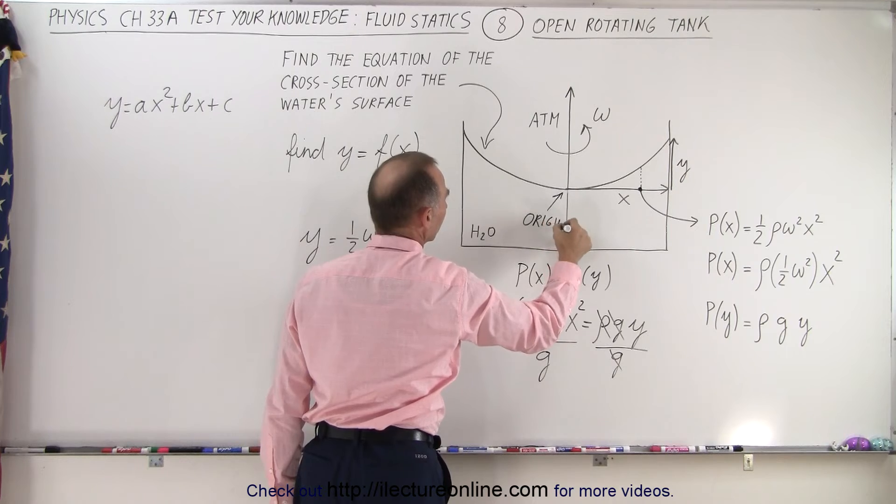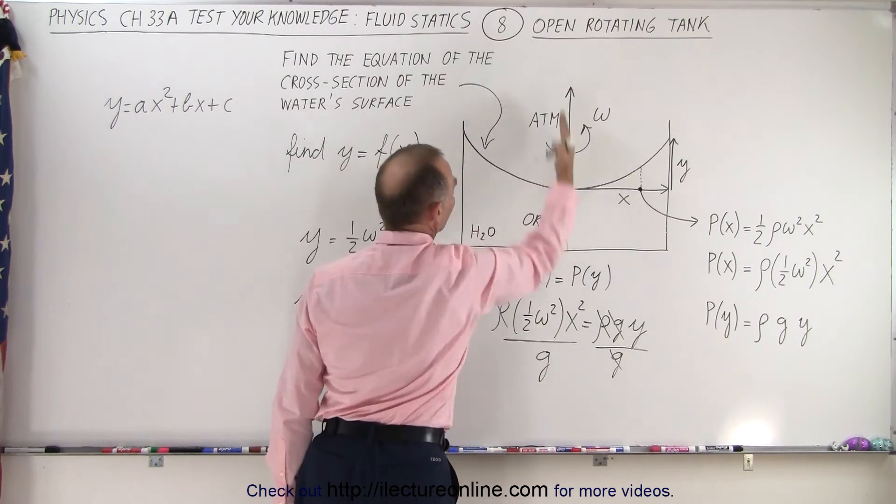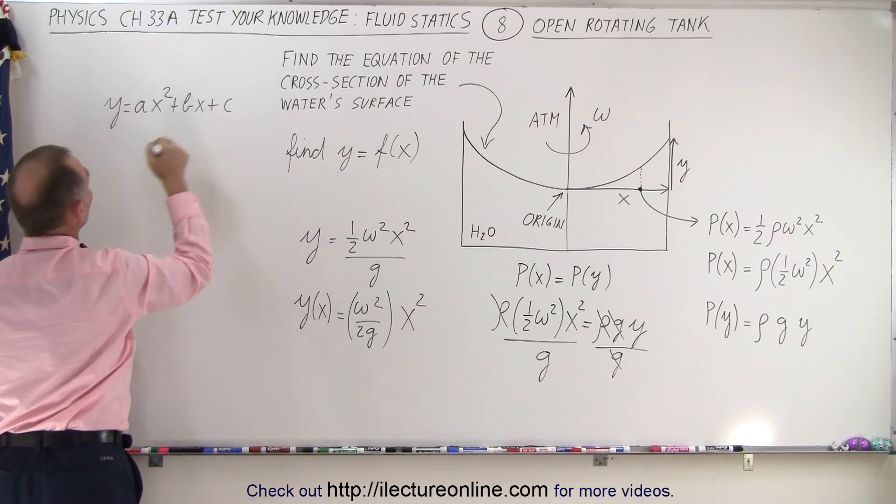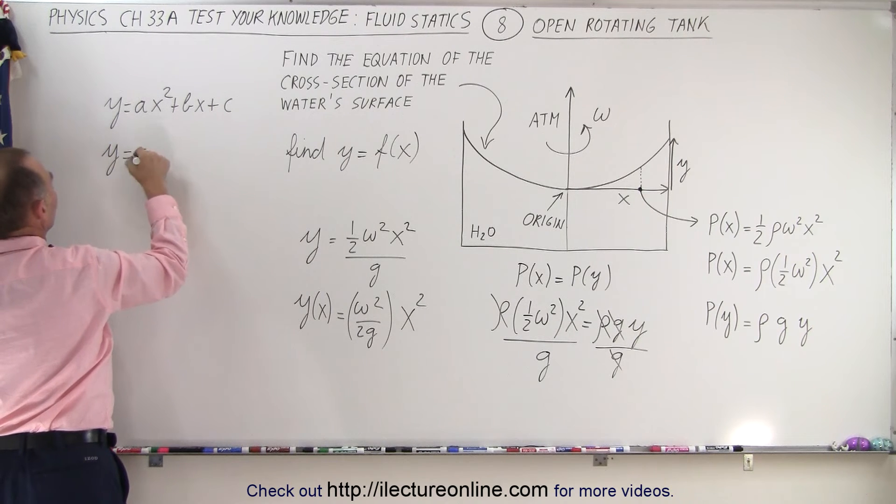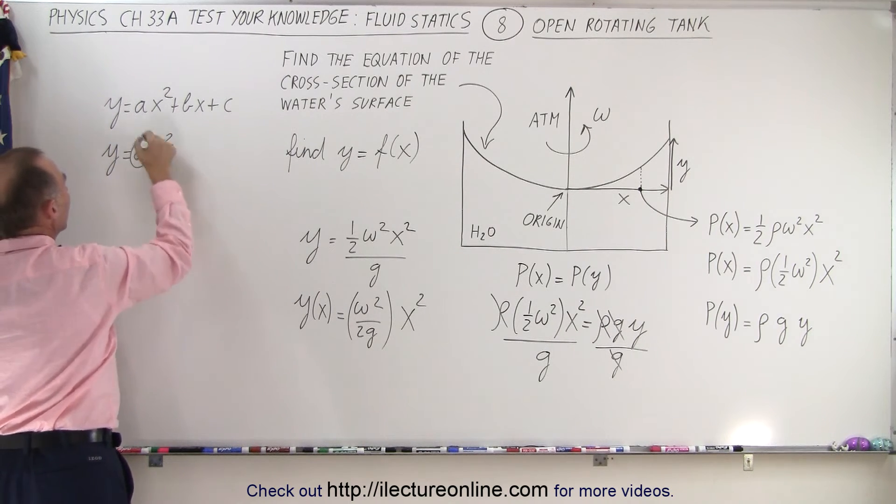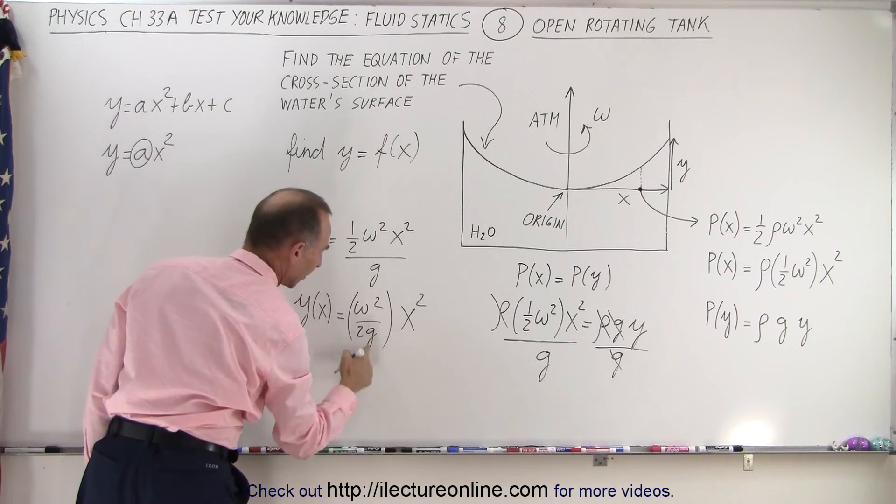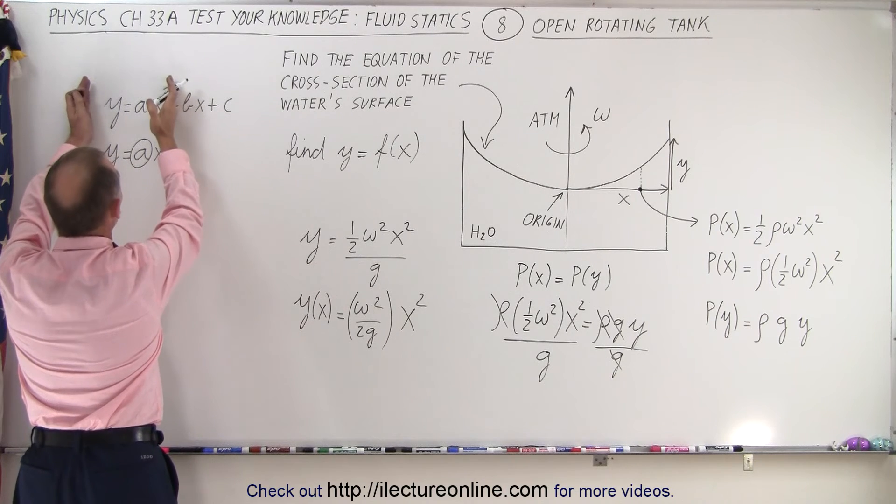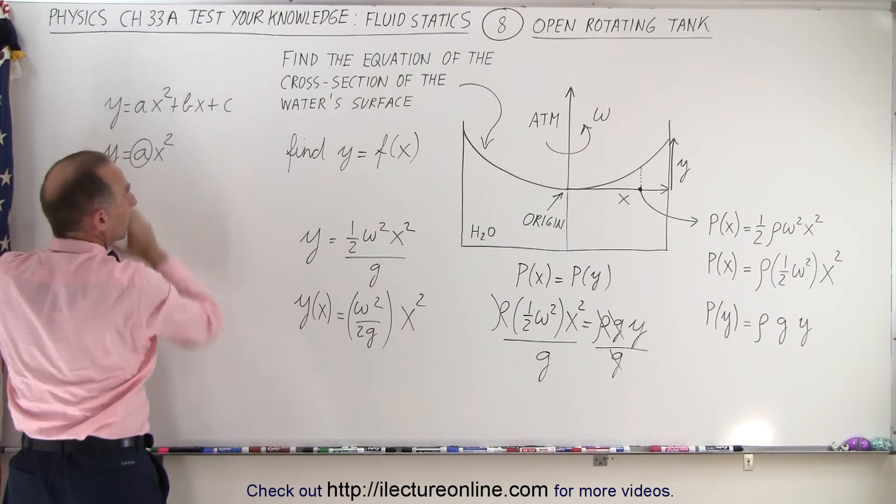and we call that the y-axis and call this the x-axis, then realize that b and c go to zero, and we just end up with y is equal to ax squared, where a is simply the same as omega squared over 2g, which means that this is the front portion of a quadratic equation.